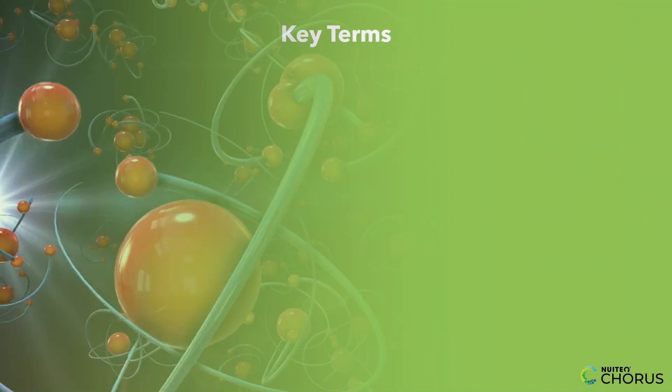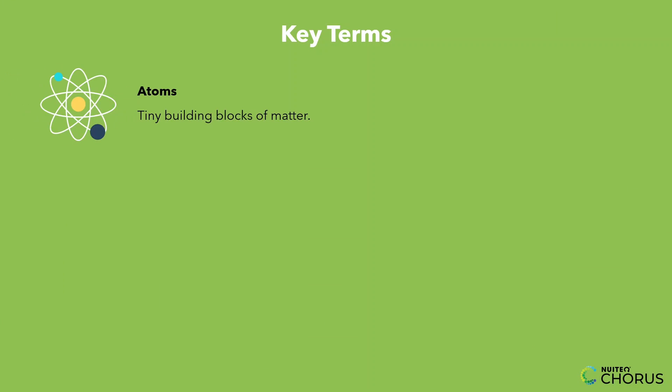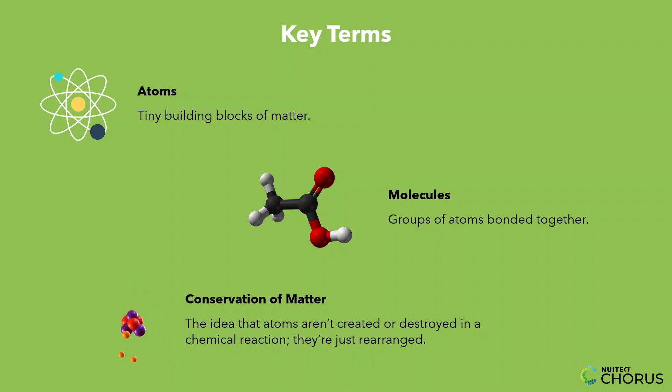Let's break it down with some key terms. Atoms are the tiny building blocks of matter. Molecules are groups of atoms bonded together. Conservation of matter is the idea that atoms aren't created or destroyed in a chemical reaction. They're just rearranged.